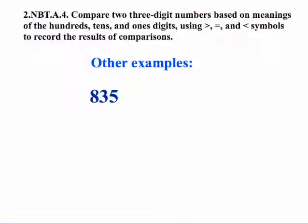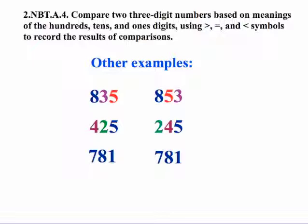Now there's other types of examples. One situation that might give students trouble that they need some experience with would be when you have numbers where two of the digits are reversed. For example, comparing 835 to 853. Or in this situation, the hundreds and the tens digits are reversed: 42 versus 24. Comparing 424 to 245. And then don't forget comparing two numbers that are the same where they're equal.